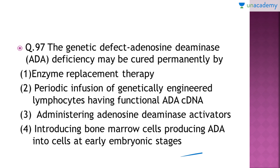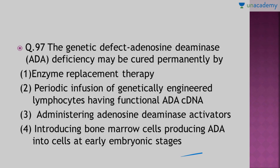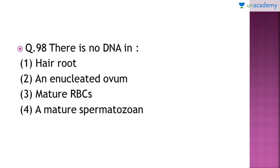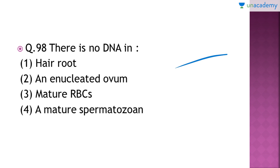Moving on to question number 98: 'There is no DNA in which of the following cells?' The right answer is option number 3 — mature RBCs. When RBCs mature, they lack a nucleus so they can store more hemoglobin. When the nucleus is lost, the DNA is also lost, so the right answer is mature RBC.